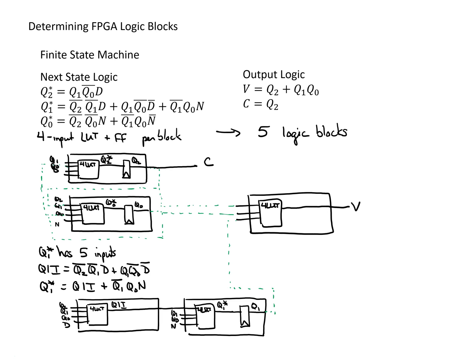With four-input lookup tables, we need a total of five logic blocks. It's important to note this is not simply because we have five equations — one equation needed two logic blocks, and one needed none. In many FPGAs, especially more recent ones, lookup tables have more inputs. In this example, since the largest number of inputs any equation had was five, if the lookup tables had five or more inputs we'd only need four logic blocks, because Q1 wouldn't need to be split. This shows how to determine how many FPGA resources are needed to implement a particular piece of digital hardware.